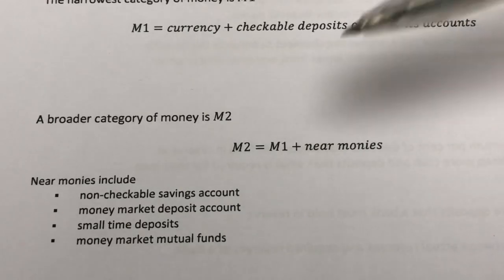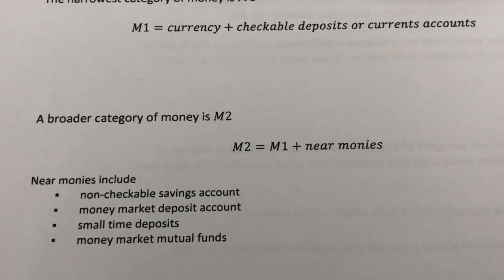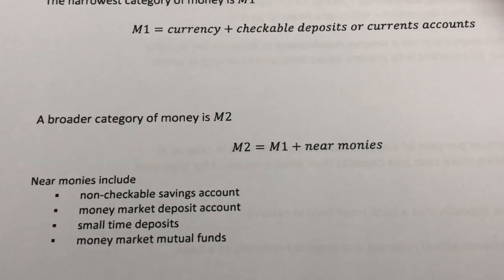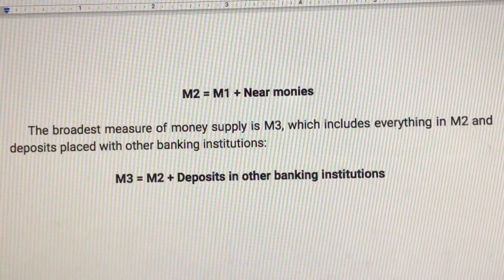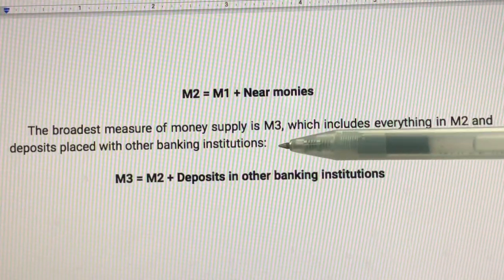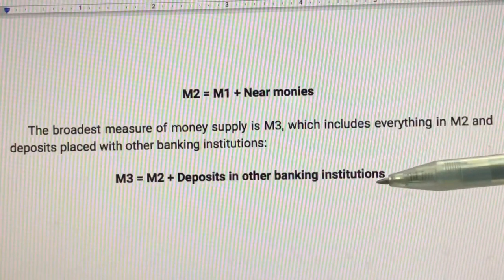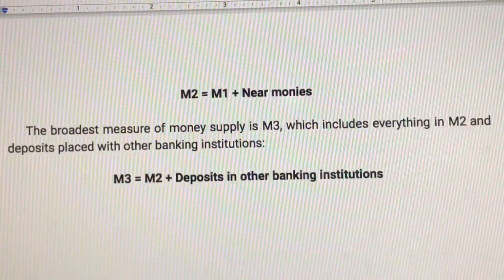Examples of near monies are savings accounts, fixed deposits, negotiable instruments of deposits, repurchase agreements, foreign currency deposits, as well as marketable securities. And finally, the broadest measure of money supply is M3, which includes everything in M2 and deposits placed with other banking institutions.